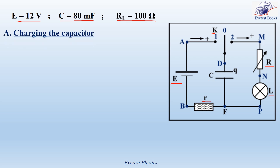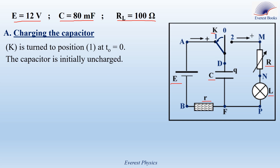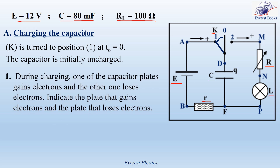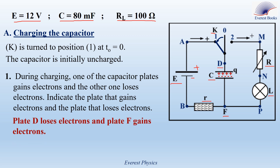Part A: Charging the capacitor. The switch K is turned to position 1 at time equal to 0, and the capacitor is initially uncharged. Number 1: During charging, one of the capacitor plates gains electrons and the other one loses electrons. Indicate the plate that gains electrons and the plate that loses electrons. Since plate D of the capacitor is connected to the positive pole of the battery, and plate F is connected to the negative pole, plate D loses electrons and plate F gains electrons.